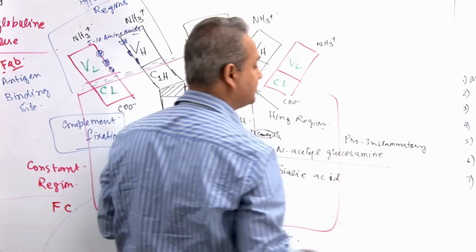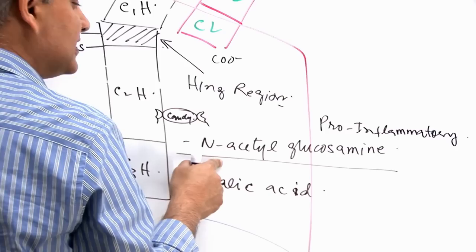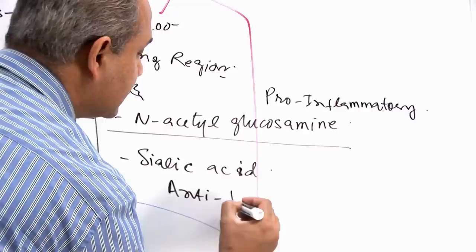This is a very important thing to know. But if instead of N-acetylglucosamine, sialic acid is attached here, then this will be an anti-inflammatory immunoglobulin.